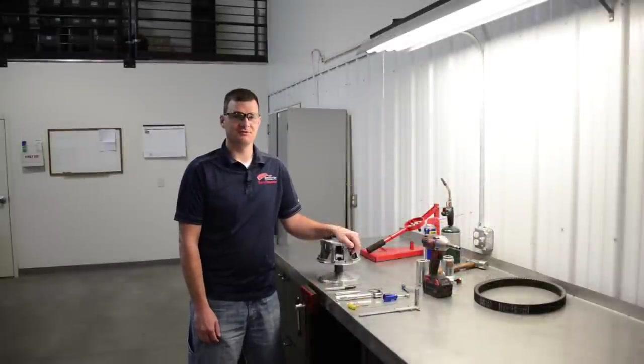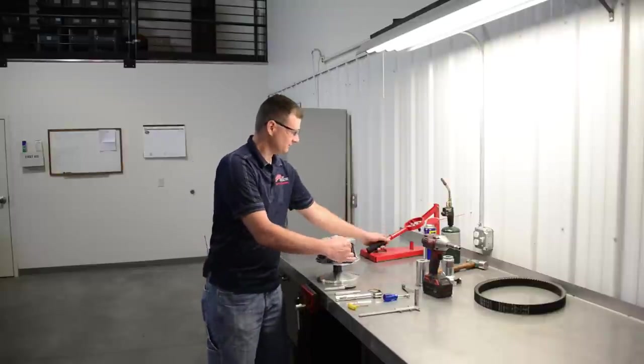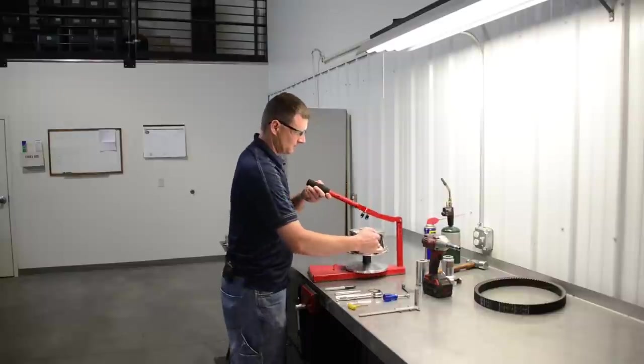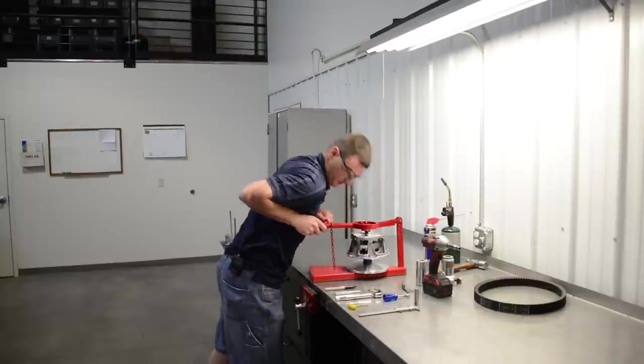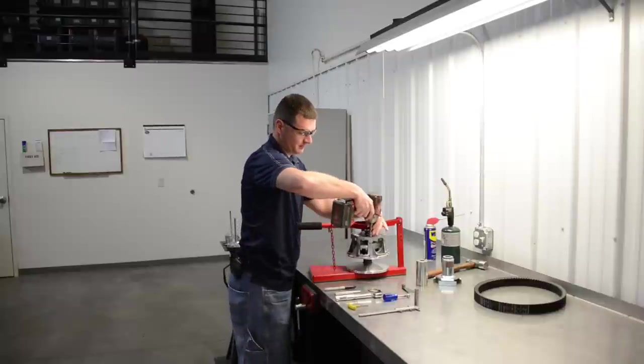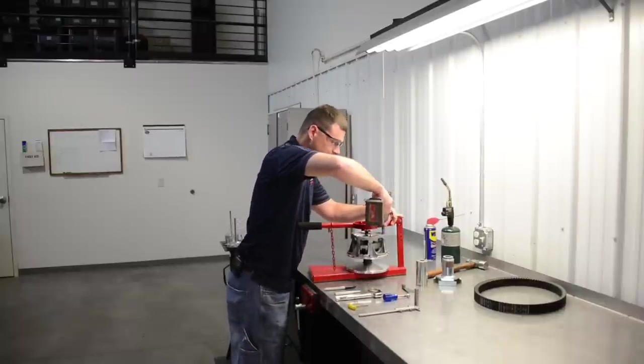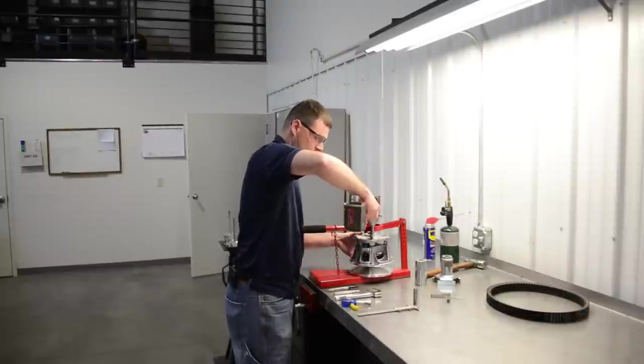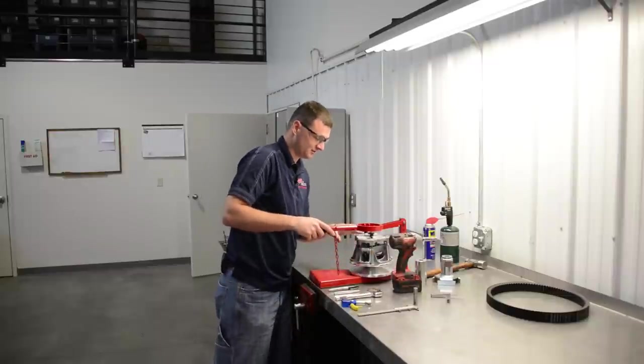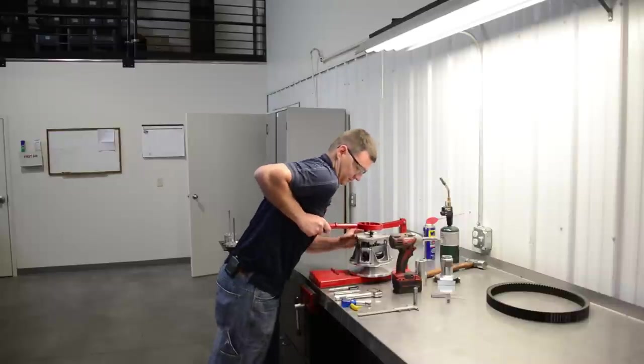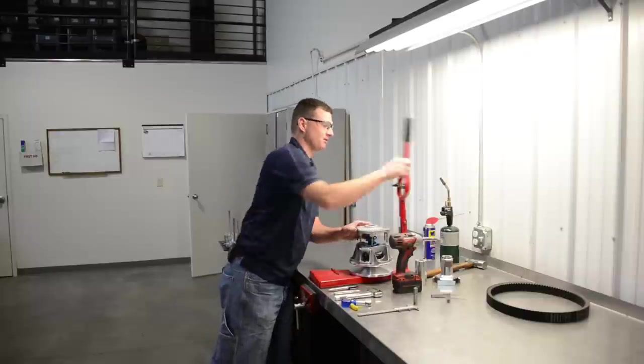So now that we've determined how much belt to sheave clearance we have, we can go ahead and disassemble the clutch and we use our press tool to do that here. Stick it in the press, clamp it down, use a 10mm and remove the cap. Now you want to be careful removing this because there's a lot of pressure on it and sometimes the cap can hang up.